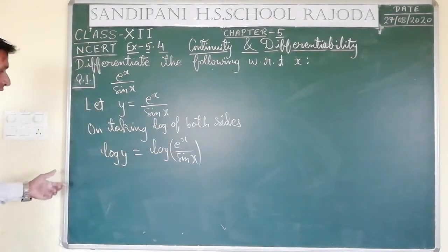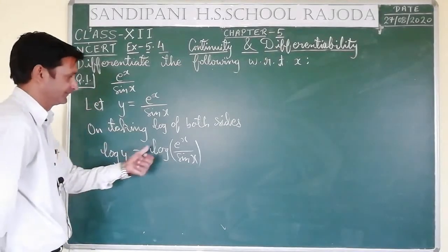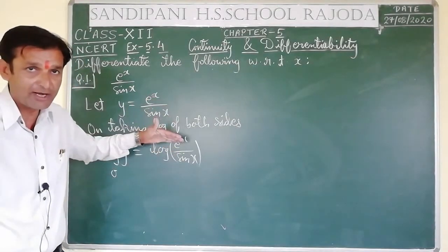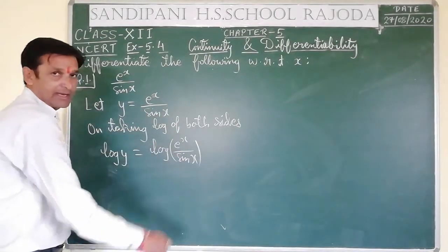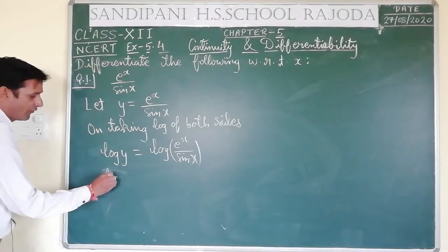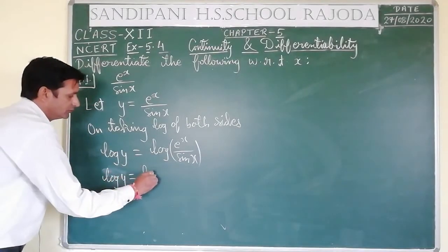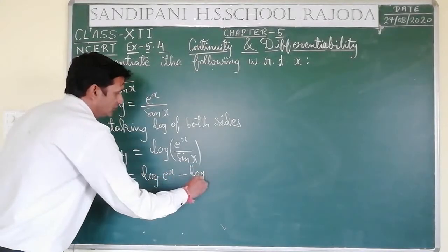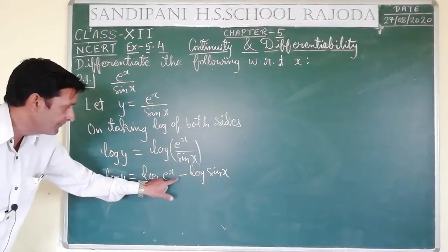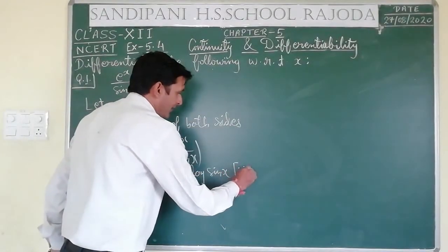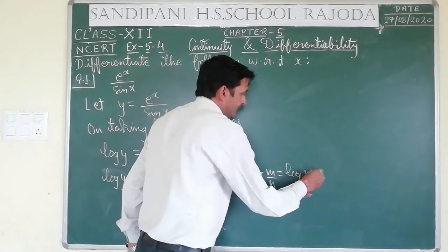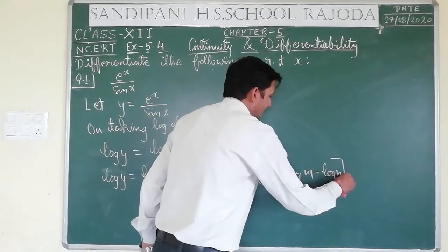Applied formula: log(m/n) = log m - log n. On differentiating with respect to x: (1/y)·dy/dx = d/dx[log(e^x)] - d/dx[log(sin x)]. log x का differentiation 1/x होता है — तो log(e^x) का differentiation 1/e^x, and then we multiply by d/dx(e^x). Similarly log(sin x) gives 1/sin x · d/dx(sin x).